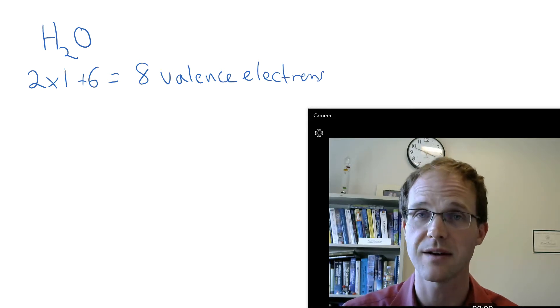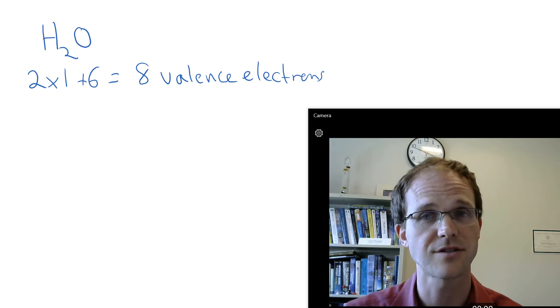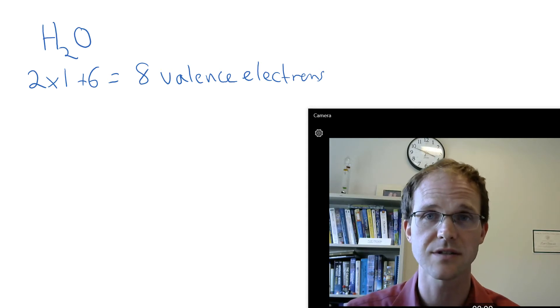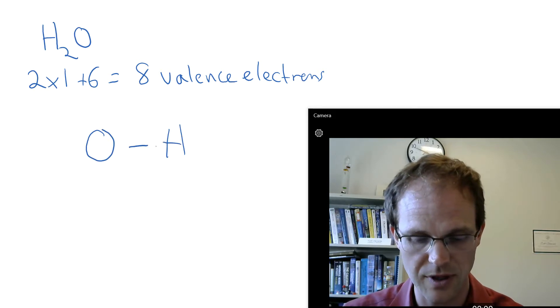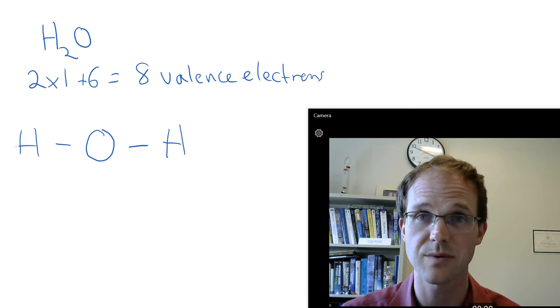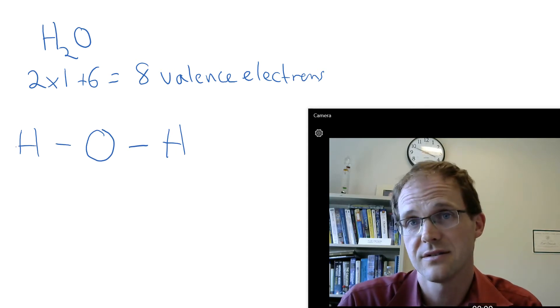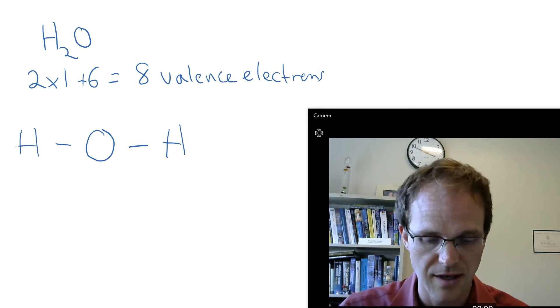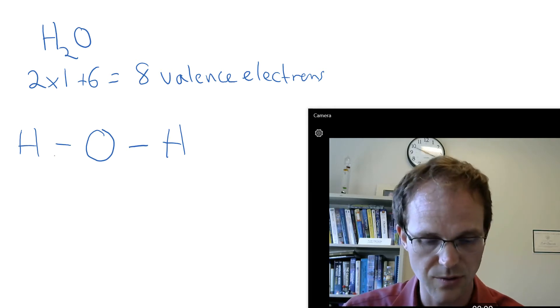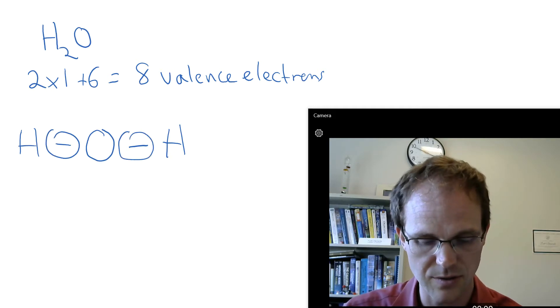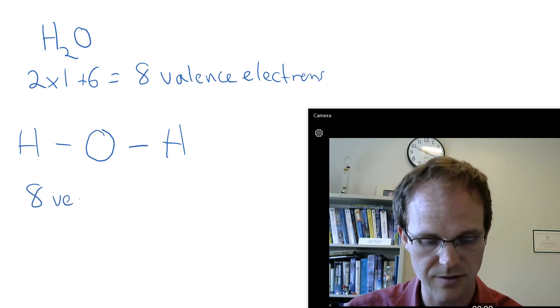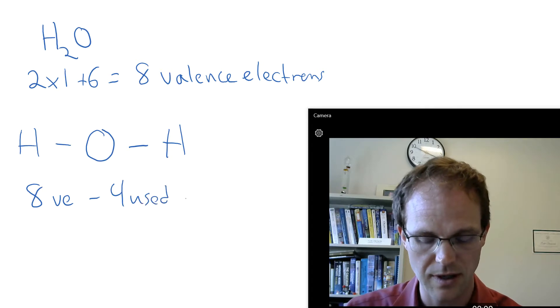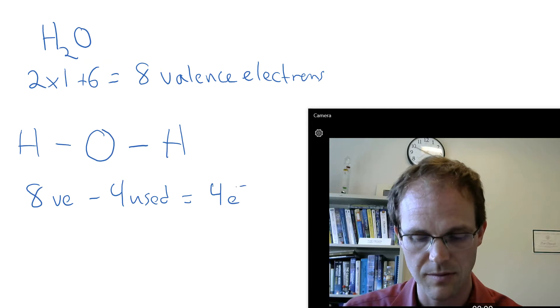So what do we do next? We pick our central atom. Hydrogen or oxygen? Oxygen is going to make two bonds because it's only got 6 valence electrons, so it's going to be our better choice for the central atom. And so we do that. Then we put our hydrogen atoms around it with single bonds. We used 2, 4 electrons. We used 2 electrons here and 2 electrons here to make our bonds. So we had 8 valence electrons but we used 4, and so we have 4 electrons left.